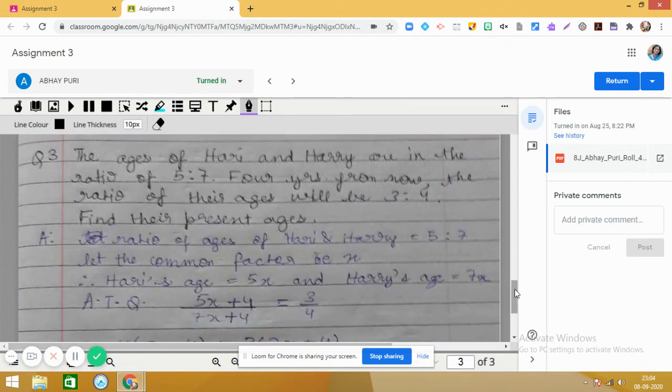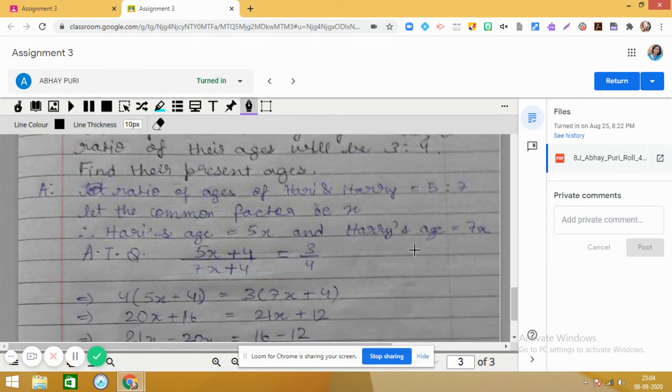Coming to the last one: ages of Hurry and Harry are in the ratio 5 is to 7. 4 years from now the ratio of their ages will be 3 is to 4. Find their present ages. Very interesting question. So here let x be the common factor, so you get Hurry's age 5x and Harry's age 7x.